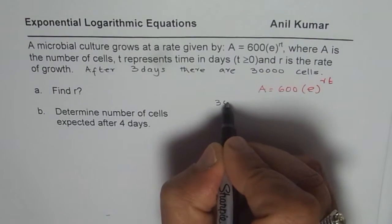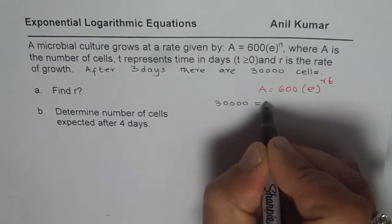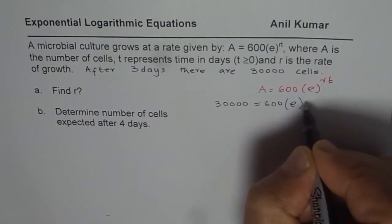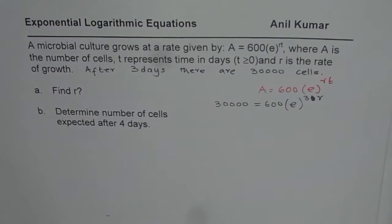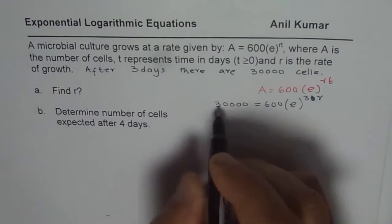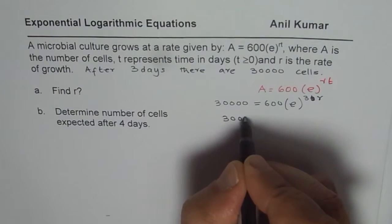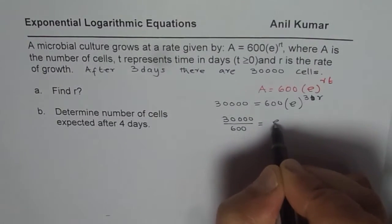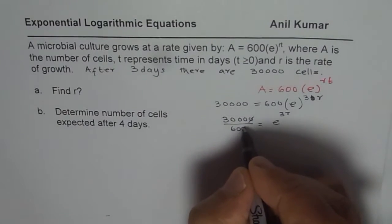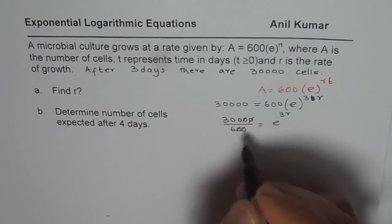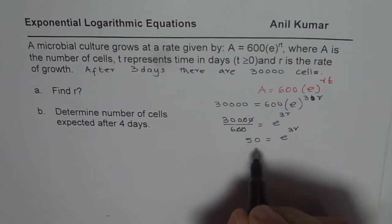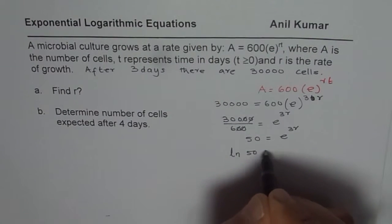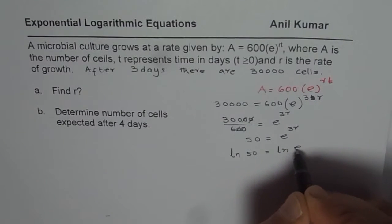We'll write 3 for t and 30,000 for A. So we get 30,000 equals 600 e to the power of 3r. T is 3, and r is the rate which we need to find. To answer this we can divide by 600 first. 30,000 divided by 600 equals e to the power of 3r, and that gives you 50 equals e to the power of 3r. Now to solve this we can take natural log on both sides, so we have ln 50 equals ln of e to the power of 3r.